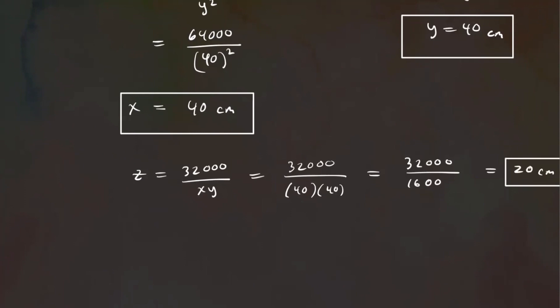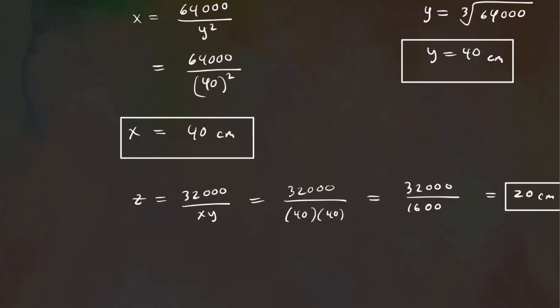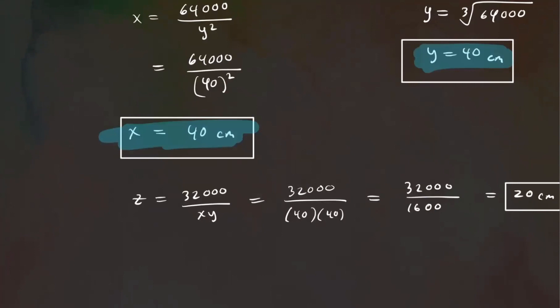So there you have it. The dimensions are X = 40 cm, Y = 40 cm, and Z = 20 cm. These dimensions will minimize the amount of cardboard used to create this open-top box.